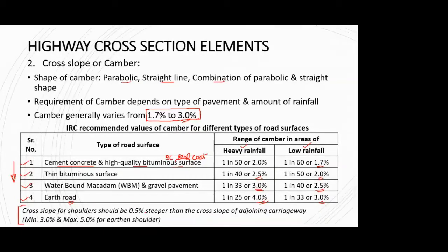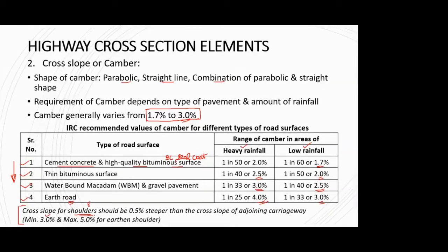Cross slope of shoulders should be 0.5% steeper than the cross slope of the adjoining carriageway — this applies mainly to earthen shoulders, since paved shoulders have the same camber as the carriageway. For earthen shoulder, the minimum camber is 3% and maximum can be up to 5%, depending on the quality of surface material used.